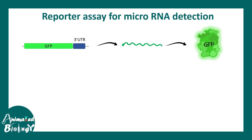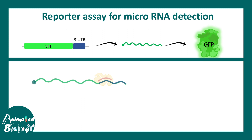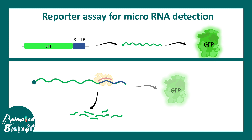There are also reporter assays. In a reporter assay, a reporter gene like GFP is used, and the 3' UTR of a target mRNA is placed downstream of the reporter. This reporter is transcribed and translated to produce GFP. If a micro-RNA binds to the 3' UTR and degrades this mRNA, less GFP is produced. By measuring GFP fluorescence, one can assess how a micro-RNA regulates that particular transcript. This is how one can study micro-RNAs in the lab.